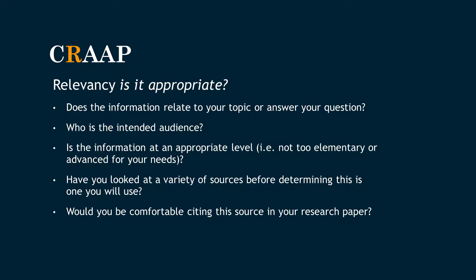Next is relevancy, where you want to check that the information relates to your topic. You can look at the title of most books and websites to determine if they are relevant. Some journal articles include an abstract or short summary that lets you know what the article is about, which is a great place to look. You also want to ask yourself who is the intended audience and is the information written at an appropriate level, because you wouldn't want to include a source in your college paper that is written for elementary school kids. Have you looked at a variety of sources before determining this is the one you will use? Ultimately, ask yourself: are you comfortable citing this source in your research paper? If the answer is no, then that source is probably inappropriate and you should continue searching.